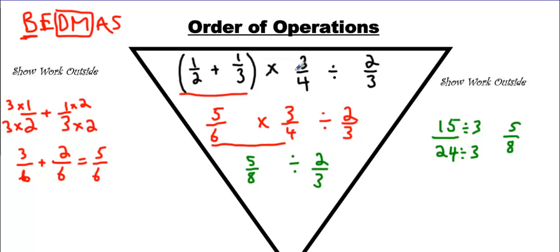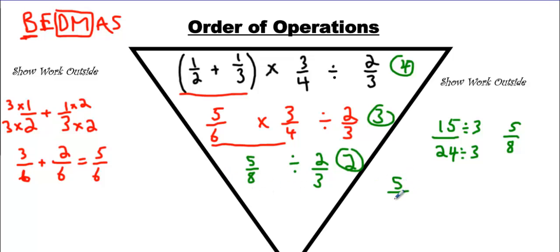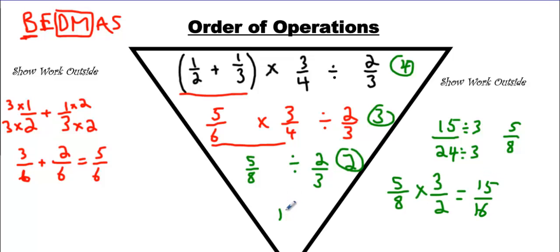So far it looks good. We have 4 terms, then 3 terms, then 2. And we have 1 step left. I'm going to show my work on the side. Change the sign to times, and then flip the second fraction. You're going to get 3 over 2. And that's going to make 15 over 16, which is my answer.